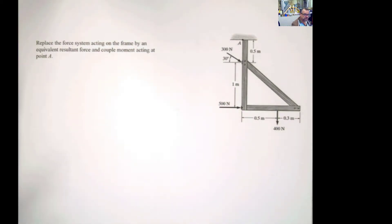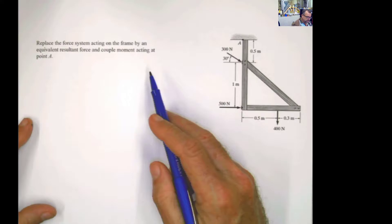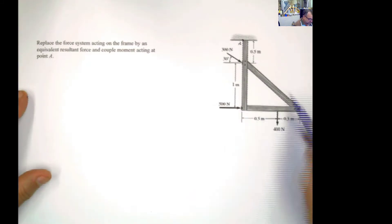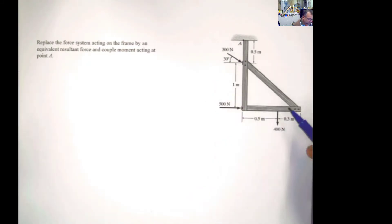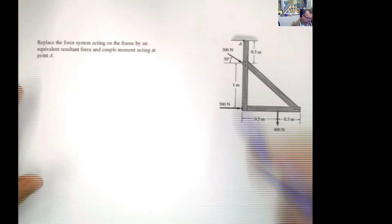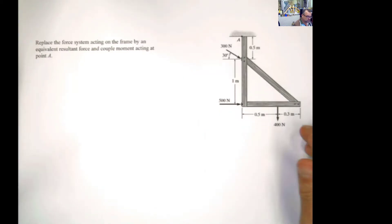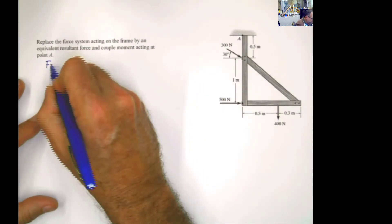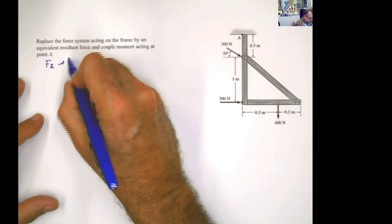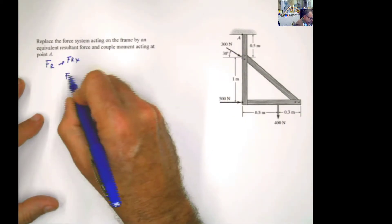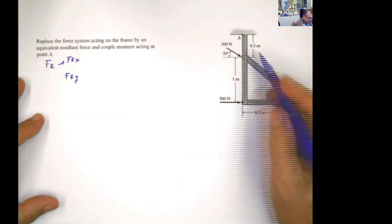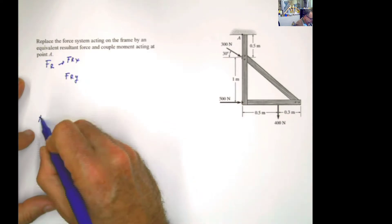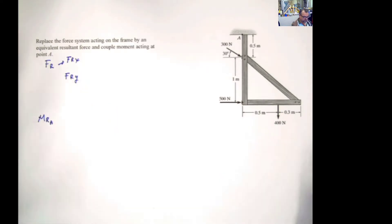Another problem dealing with equivalent systems. For this case, the problem is asking to substitute or replace every single one of those forces for a force and a moment at A. The problem is asking you to do summation of forces in x and summation of forces in y to calculate the resultant force, find the resultant force in x, the resultant force in y, and also find the moment of all of those forces with respect to point A — the resultant moment at A.